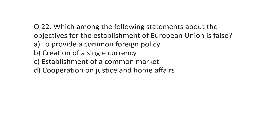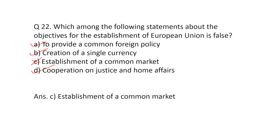Question number 22: which among the following statements about the objectives for the establishment of the European Union is false? A is to provide a common foreign policy. B is creation of a single currency. C is establishment of a common market. D is cooperation on justice and home affairs. European Union objectives definitely included a common foreign policy, a single currency (Euro), and cooperation on justice and home affairs. Establishment of a common market was not an objective, so the correct false statement is C.